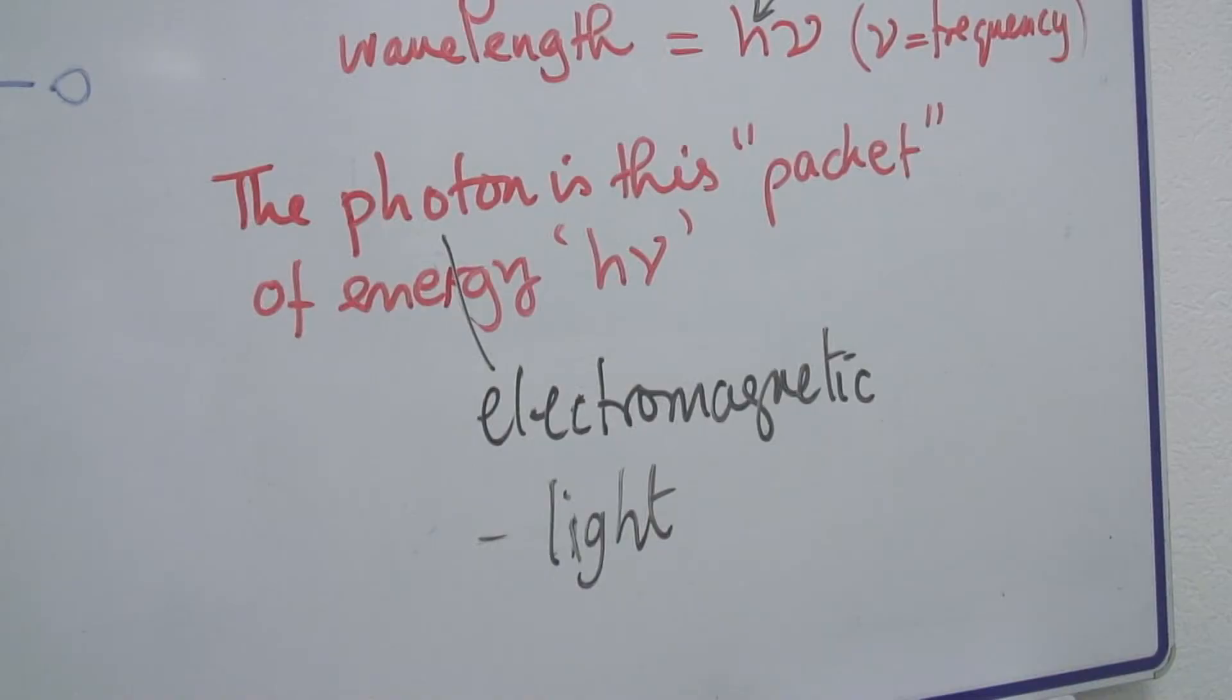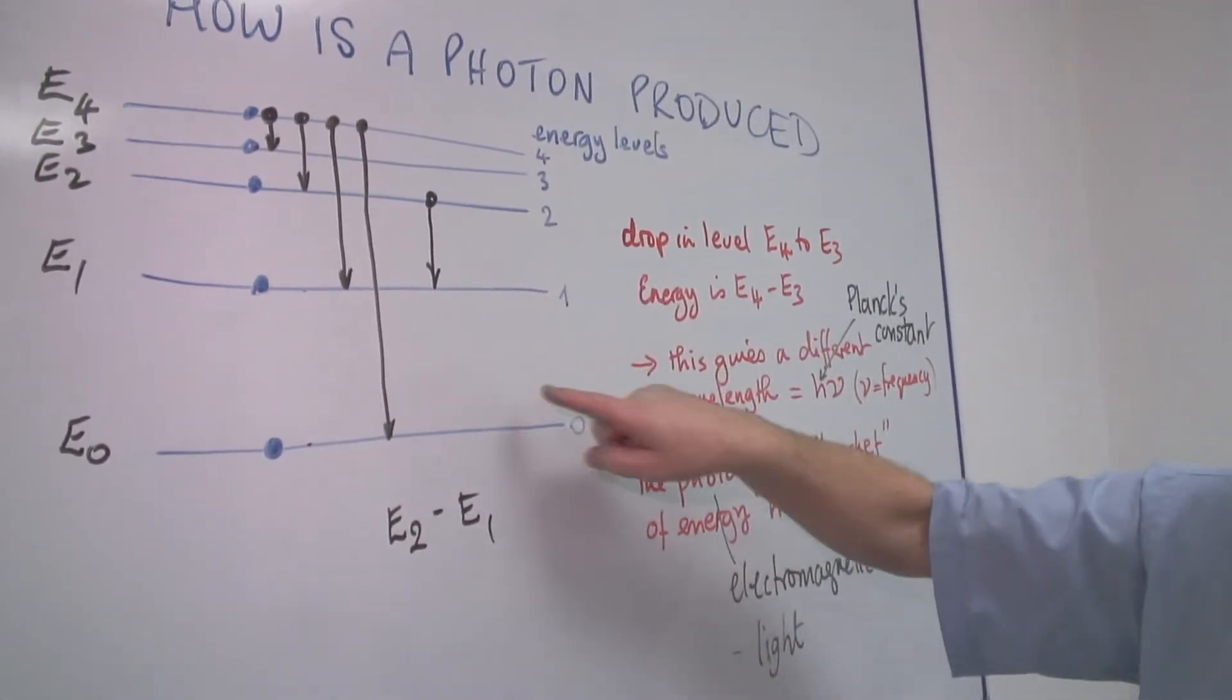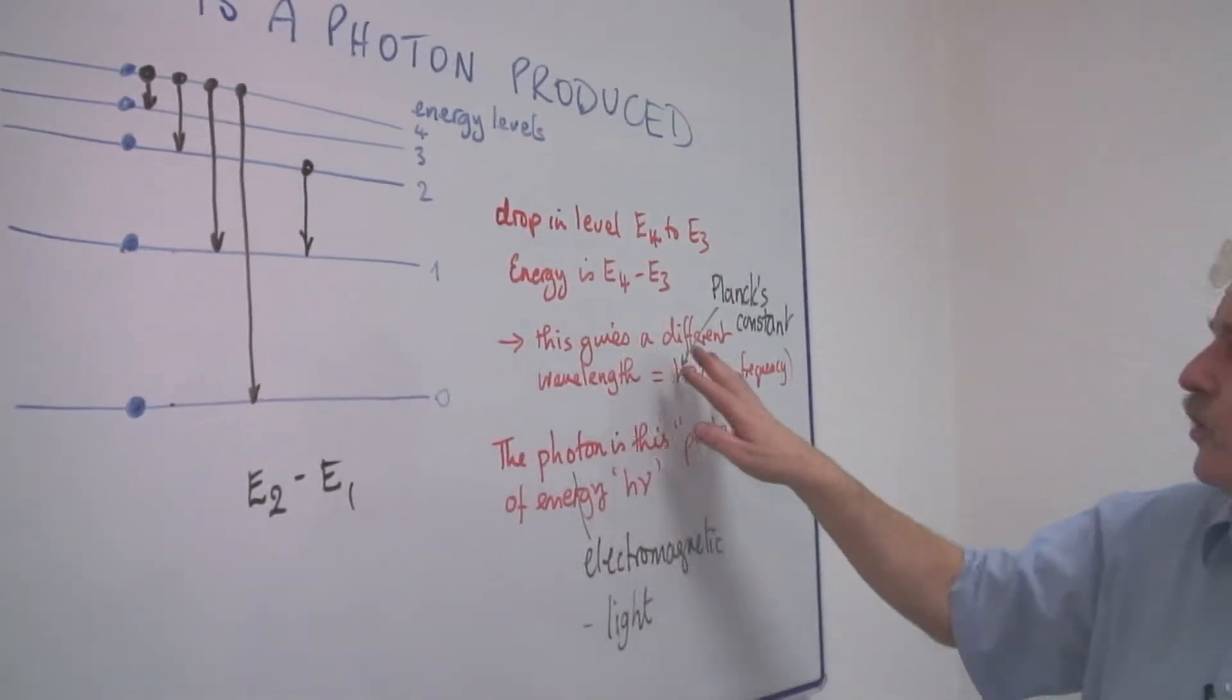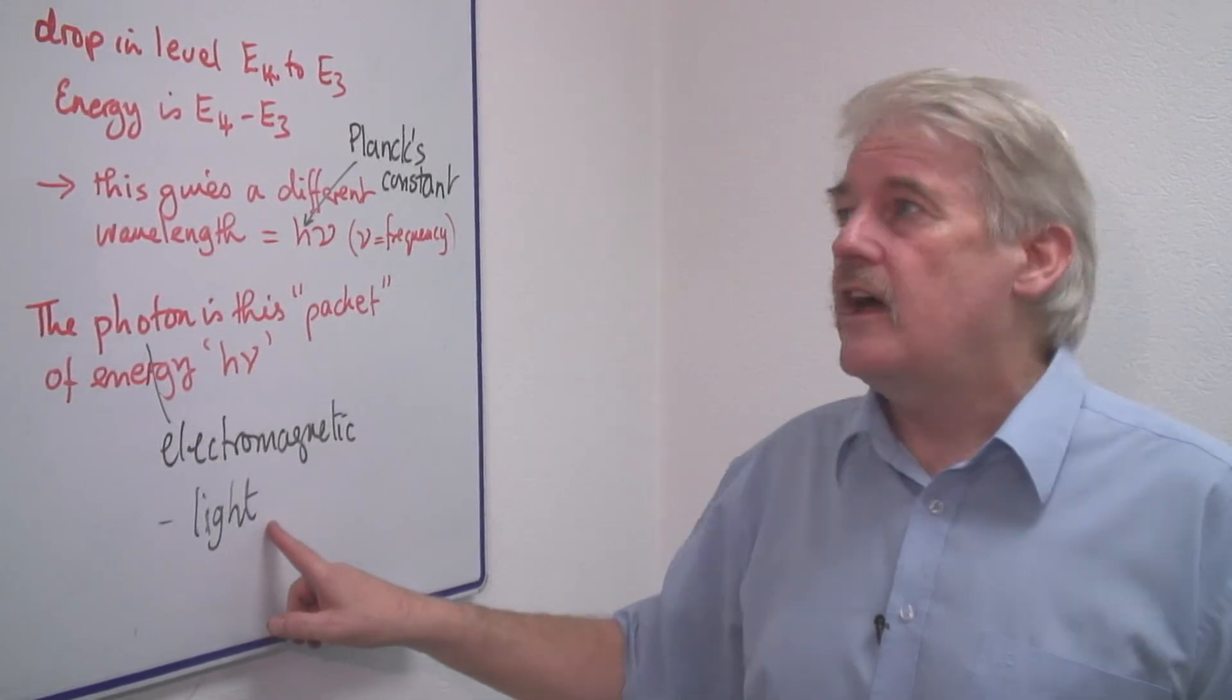But the photon depends on how big the change is, and the changes can be of all different energies. So it will give out all different wavelengths and frequencies, and all different types of light.